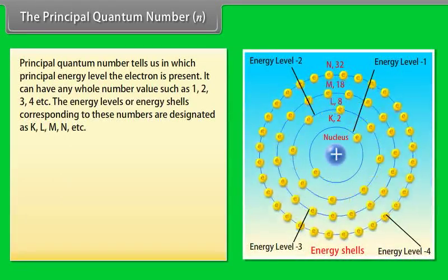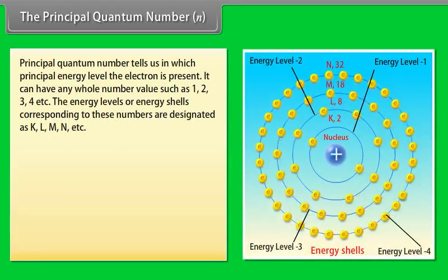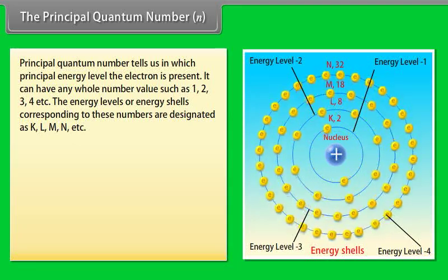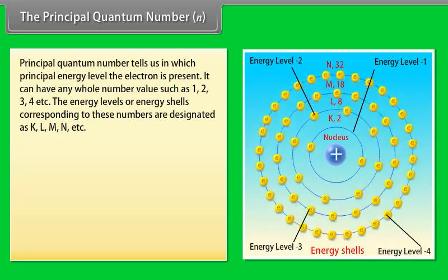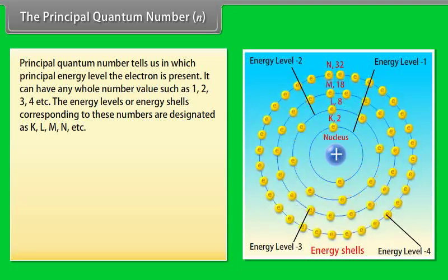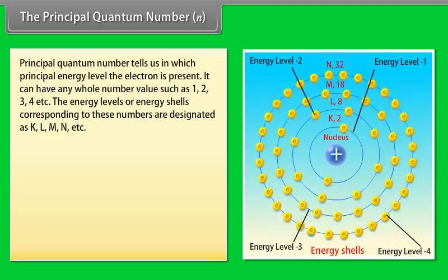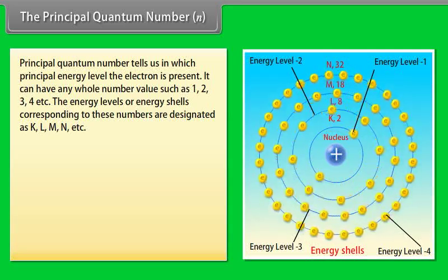The Principal Quantum Number N: The principal quantum number tells us in which principal energy level the electron is present. It can have any whole number values such as 1, 2, 3, 4, etc. The energy levels or energy shells corresponding to these numbers are designated as K, L, M, N, etc.